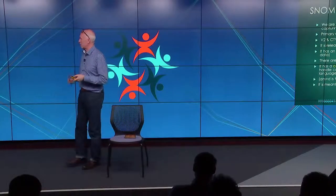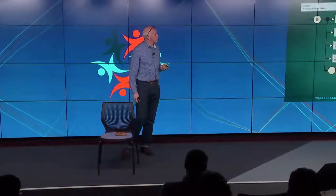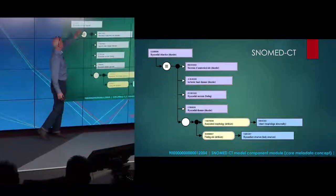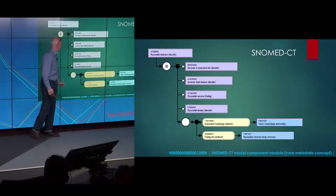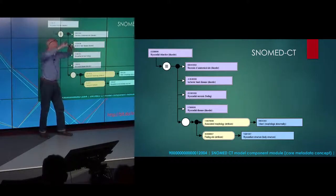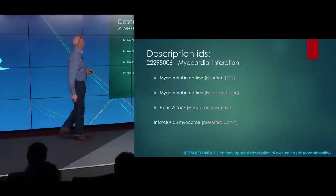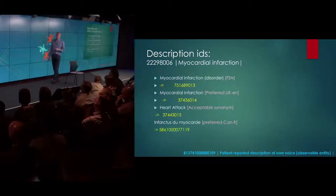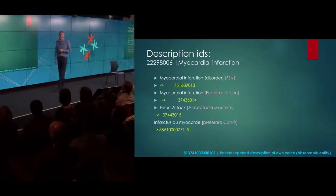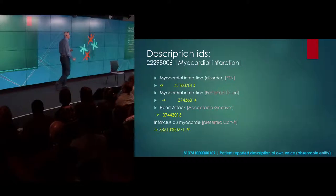SNOMED has an arrangement with the Regenstrief Institute, who manage LOINC — a laboratory observations classification. In theory they don't overlap — they kind of meet — though for those of us working with the data, it's not always straightforward to plug them together. SNOMED CT is fully versioned. As an example, the concept myocardial infarction has its code and description, is a child of multiple parents, and has attributes — ischemic heart disease has a morphology attribute of infarct. You can create a three-dimensional cube of terminology. Descriptions have their own IDs; the French Canadian 'infarctus du myocarde' has its own ID, but the core concept is universal throughout SNOMED.